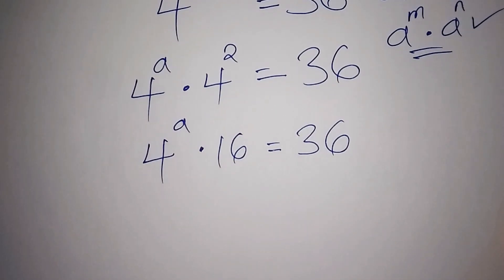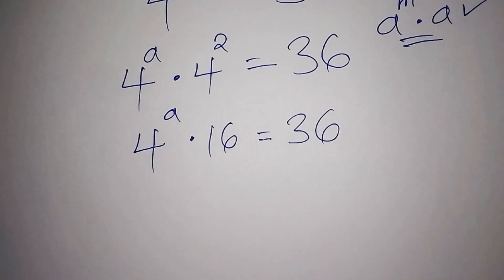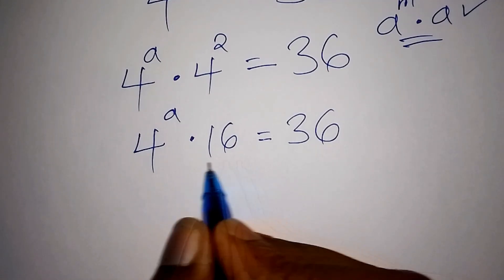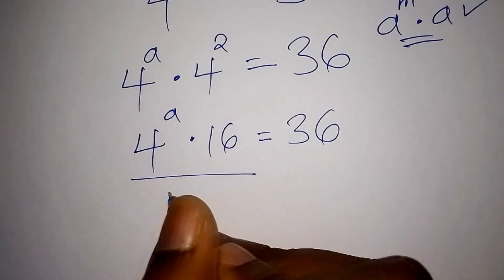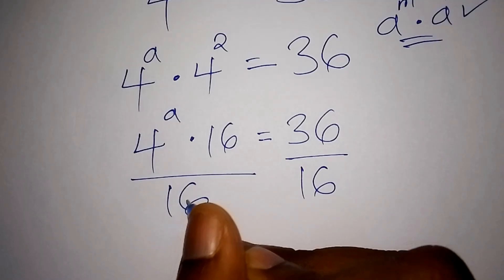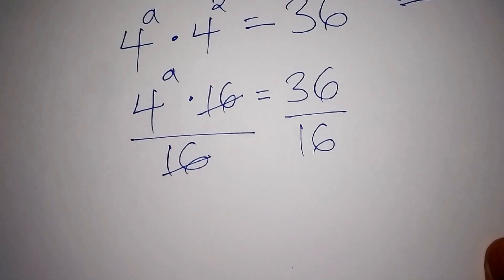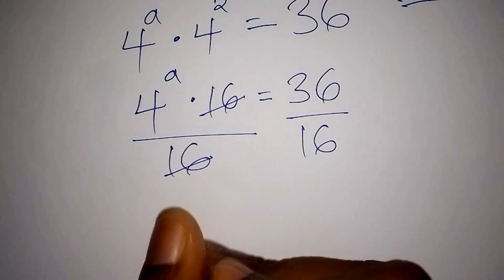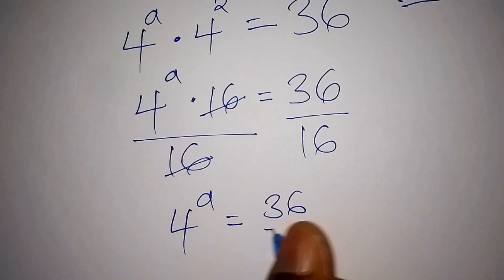The next step is to divide both sides by 16, so that we remain with 4 to the power of a on the left side. The 16 and 16 cancel, so we now have 4 to the power of a equals 36 over 16.